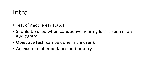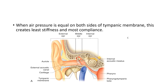What does impedance mean? Impedance is a kind of resistance. Whenever the sound waves travel from the external ear to the middle ear, some amount of resistance is provided by the tympanic membrane. The tympanic membrane is the membrane that separates the external ear from the middle ear. The external ear consists of the pinna and the external auditory canal, and the middle ear is an air-filled cavity that consists of ossicles. Some of the sound waves get absorbed and transmitted, whereas some of them get reflected back.